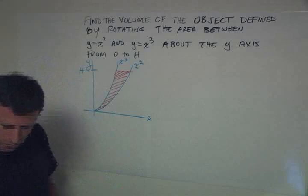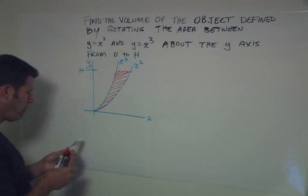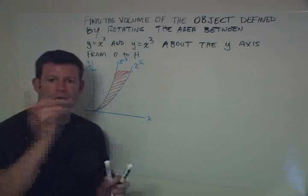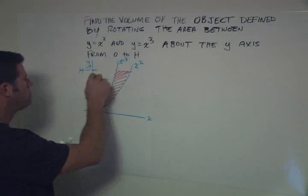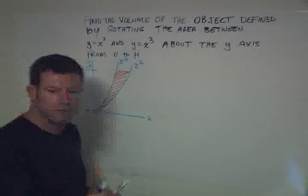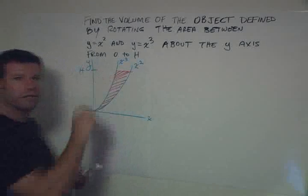So think about this. In this case, our washer, the thing we're creating by taking this line essentially and rotating it, is going to be a thickness along the y axis. So the washer is going to have a thickness of dy.